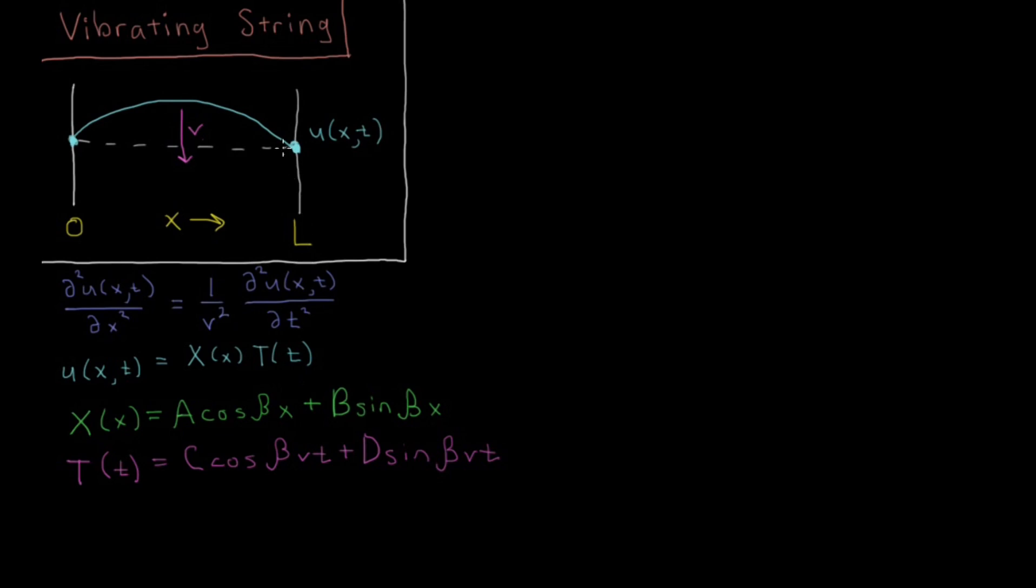To review from last time, we have some string here which is going to vibrate with some displacement u which is going to be varying over position x and time t. Any displacement in this is going to propagate forward with some velocity v. This type of system obeys this second-order partial differential equation, which is the classical wave equation down here.